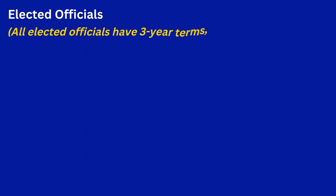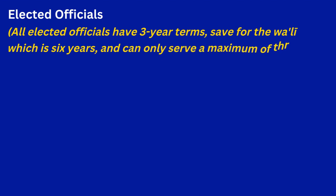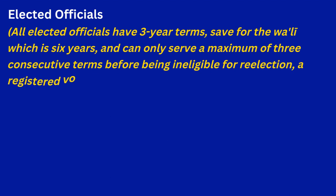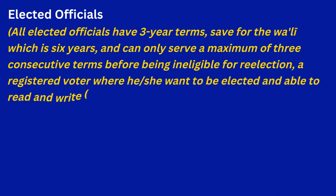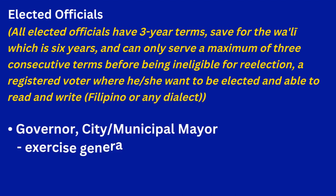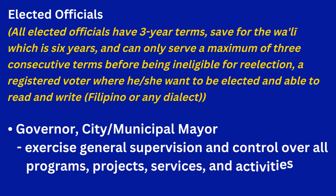Who are the elected officials of our respective local government units, and what are their responsibilities? All elected officials have three-year terms, save for the WALI which is six years, and can only serve a maximum of three consecutive terms before being ineligible for re-election. They must be a registered voter where he or she wants to be elected, and able to read and write either Filipino or any dialect.